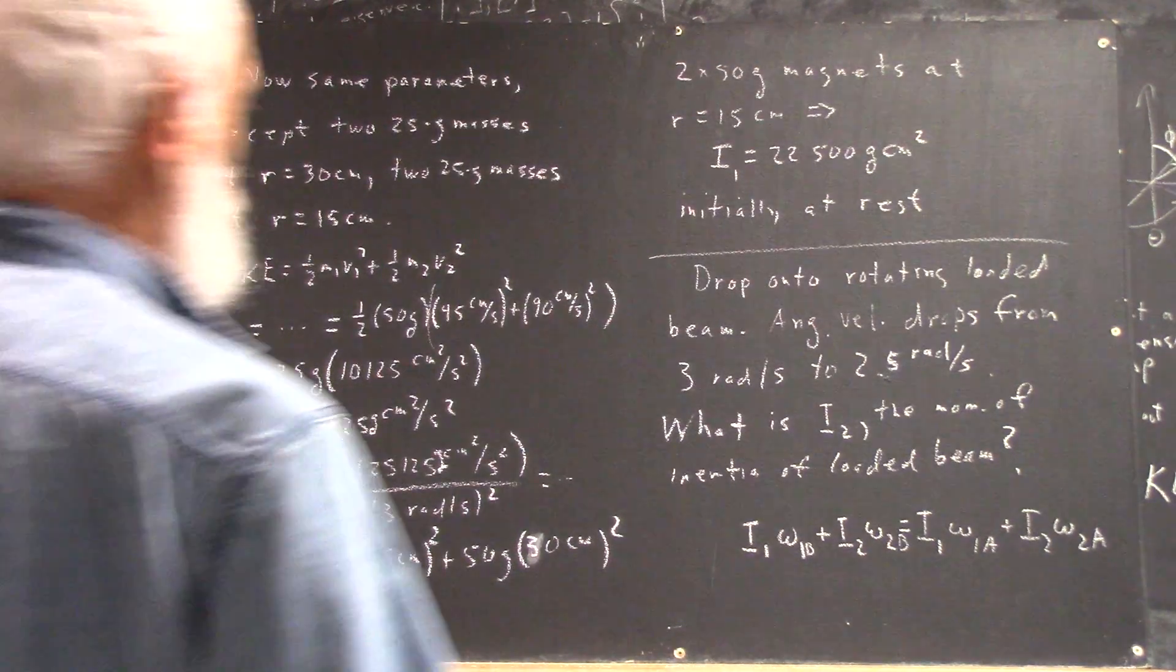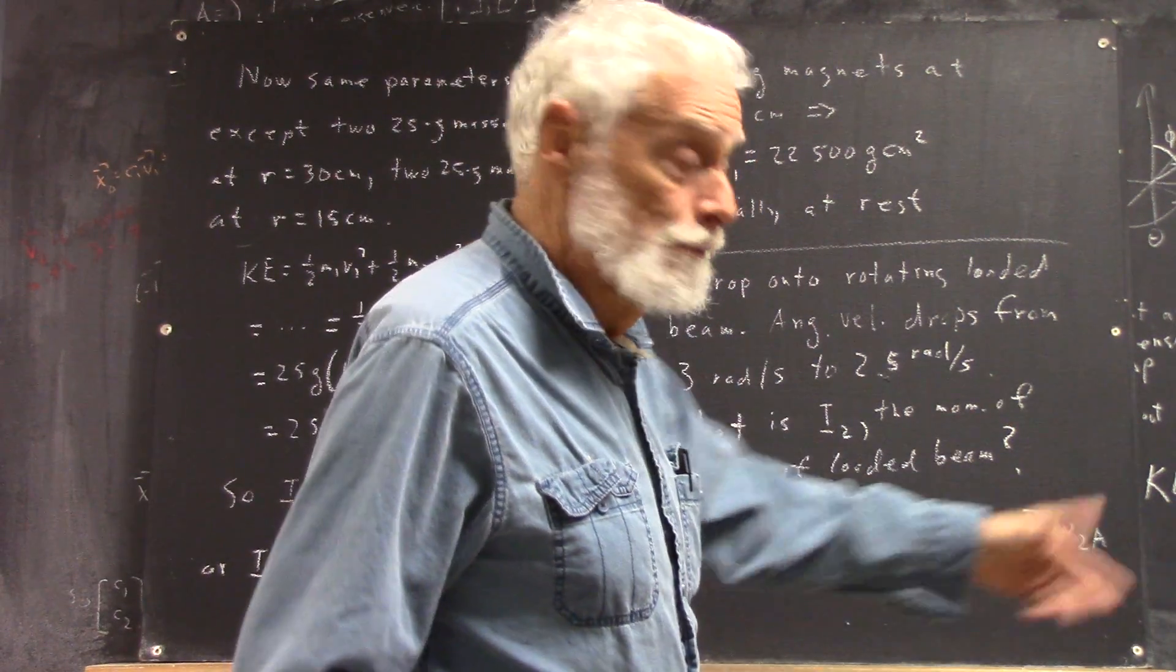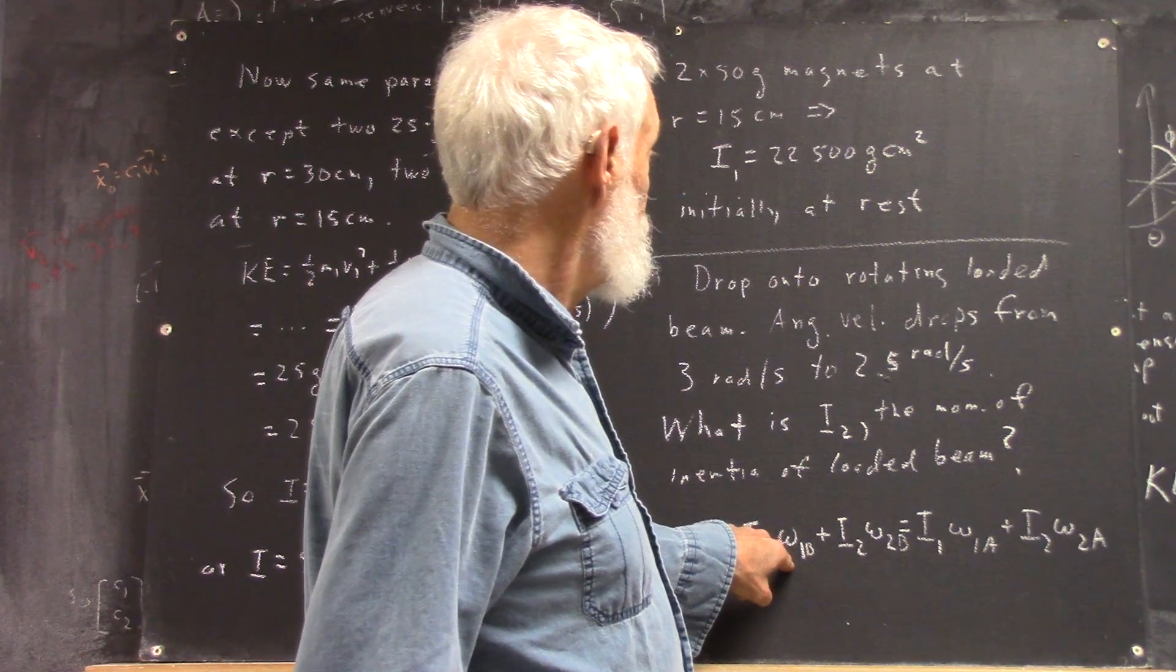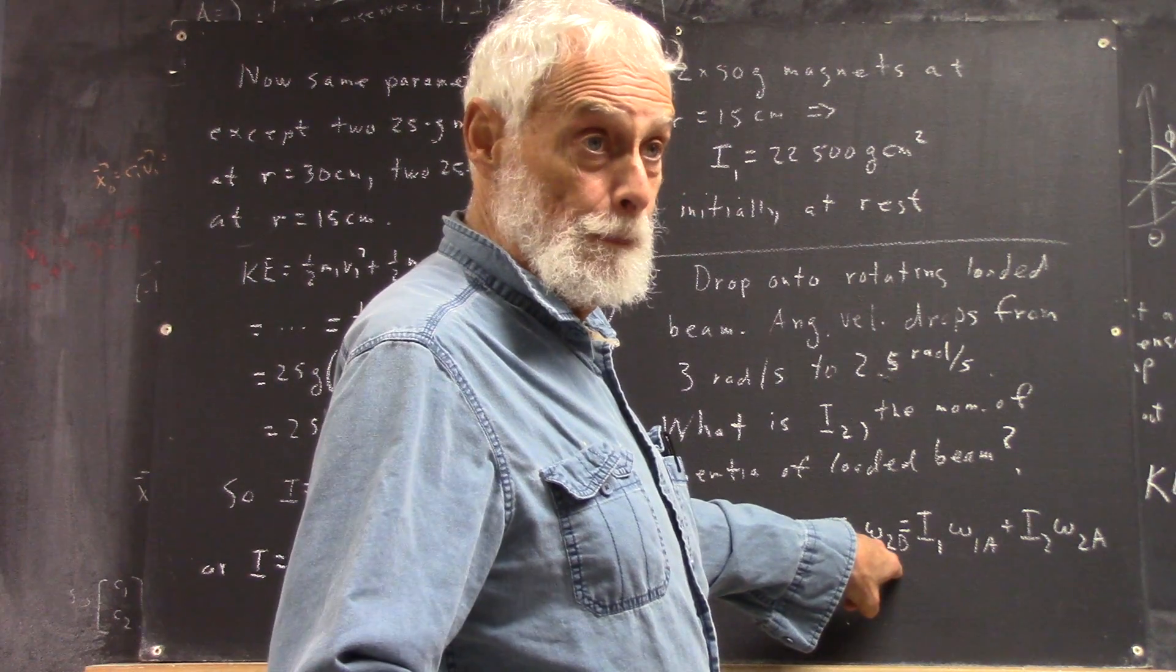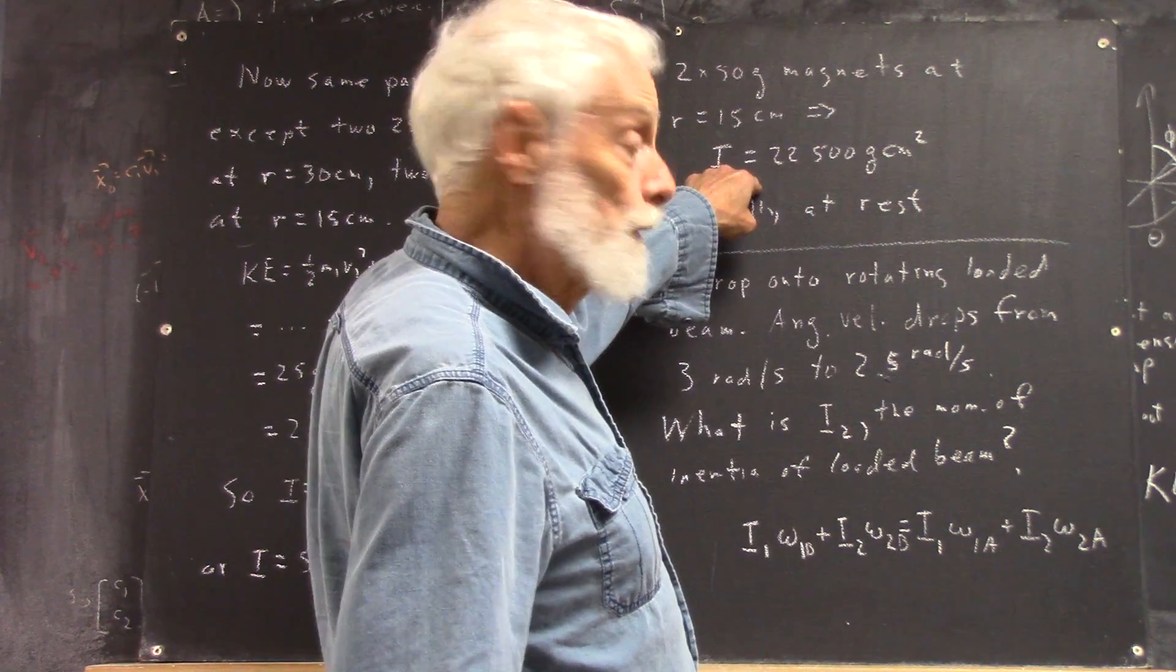Okay, so if we know everything here, omega 1 before is 3 radians per second, and omega 2 before is 0, right? Because these things aren't moving before.